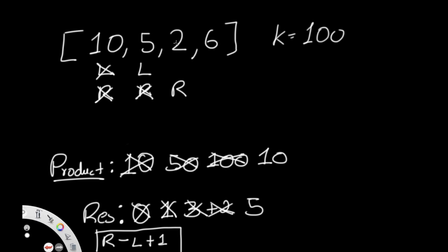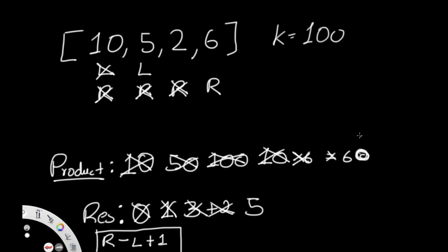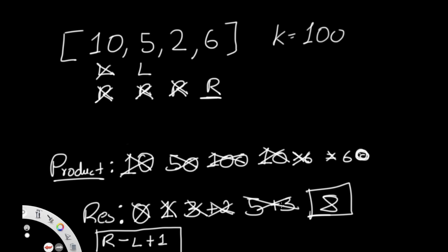We move right to index 3. The product becomes 10 × 6 = 60, which is less than 100, so we don't need to move the left pointer. We compute right minus left plus 1: 3 - 1 + 1 = 3. Result becomes 5 + 3 = 8. And 8 is our final answer, which we return as output.